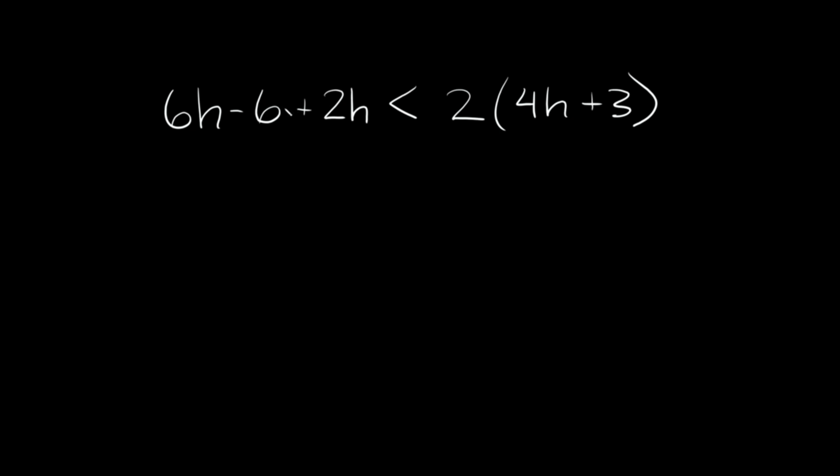So let's start with this one. We have 6h minus 6 plus 2h is less than 2 times in parentheses 4h plus 3. The first thing we want to do here is just combine like terms. So first of all we have 6h plus 2h that's equal to 8h, and then we have this minus 6.